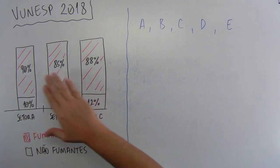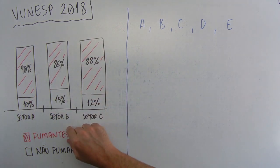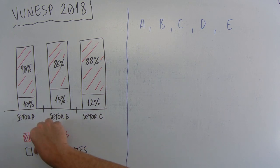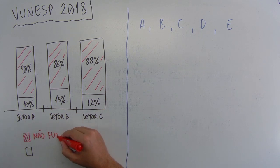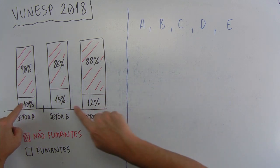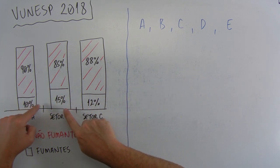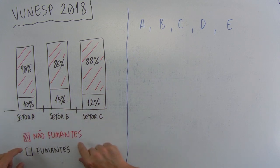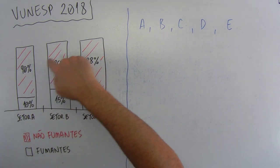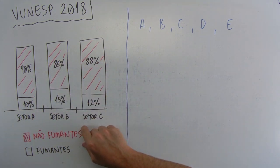No setor B tem 85% e 15%, está aqui. E no setor C tem 12% e 88%. Se você fizer a soma dessas barrinhas individualmente, cada uma delas dá 100%. E o que significa tudo isso aqui? Essa parte achurada, a parte de cima, são as pessoas fumantes e a parte de baixo são as pessoas não fumantes. Na verdade, está ao contrário aqui. Agora sim, a menor parcela aqui embaixo, a menor porcentagem de cada um dos setores são os fumantes e a maior porcentagem dos setores são os não fumantes. Beleza.